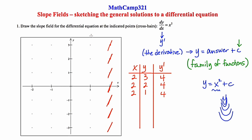Let's move to the next column to the left. All of these have an x-coordinate of 1. We start on top with (1, 3). The y value can be disregarded because there's nowhere to plug it in, but if I square 1 I get 1. So let's draw a segment with a slope of 1. This is going to be less steep than a slope of 4 — relative to those, these will be less steep, maybe something like that.